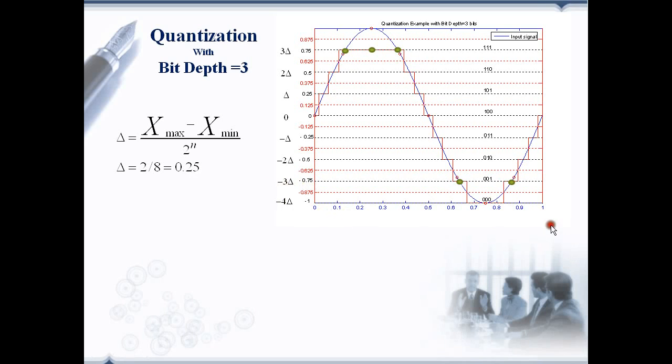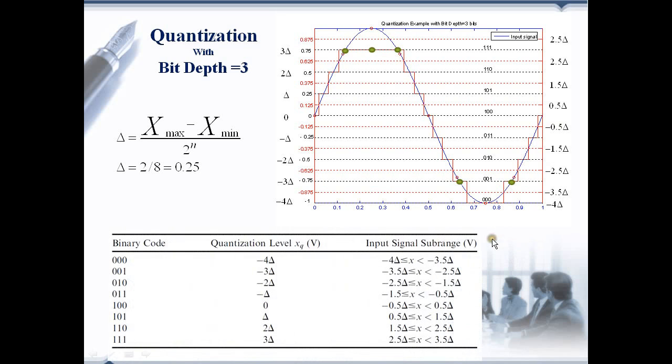In the same way, we can represent the range of voltage in terms of step size. Here we can see that if the input is in this range, less than -3.5 del and greater than or equal to -4 del, then it is rounded off to the nearest quantization level of -4 del. Similarly, the remaining ranges are expressed in terms of step size and tabulated here.